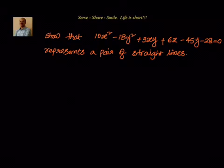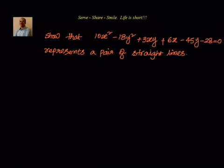Hello friends, welcome back, hearty welcome to you. In this session, as part of pair of straight lines, we will look at the condition that needs to be satisfied by a second degree general equation to be a pair of straight lines. We have been asked to show that 10x² minus 18y² plus 3xy plus 6x minus 45y minus 28 equals 0 represents a pair of straight lines.